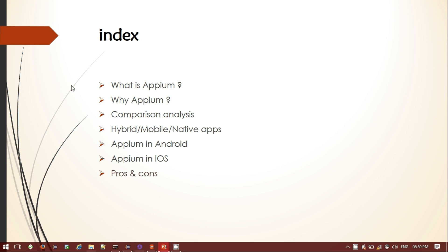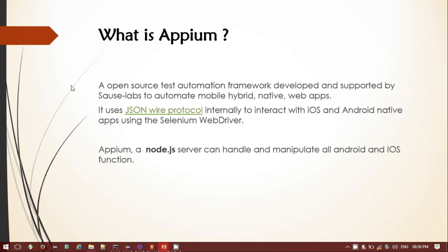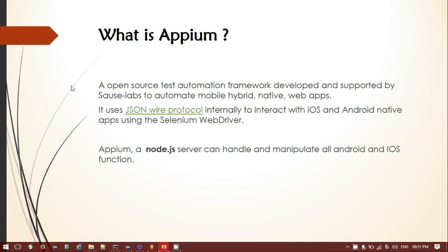Before we start, let's look at what APM is. APM is the open source mobile test automation framework for mobile testing. It has been developed and supported by Sauce Labs to automate mobile hybrid, native, and web applications. An important feature is that it uses the JSON wire protocol internally to interact with iOS and Android native apps using the Selenium WebDriver. APM is basically a Node.js server that can handle and manipulate all kinds of Android and iOS functions and operations.